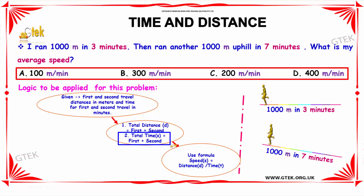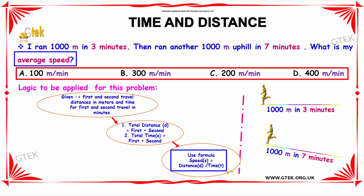And lastly, we have to find the average speed by using the formula: speed is equal to the total distance divided by total time.